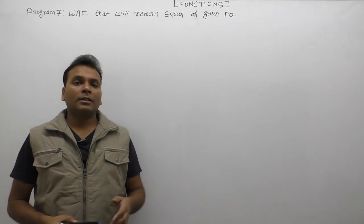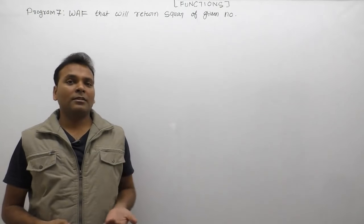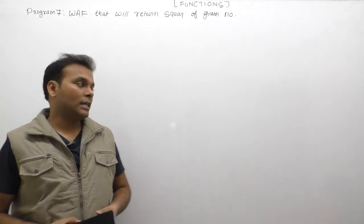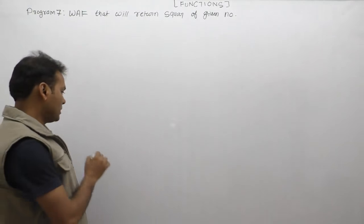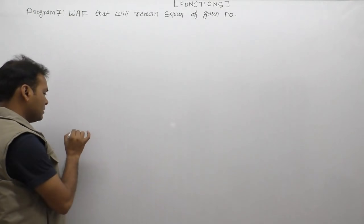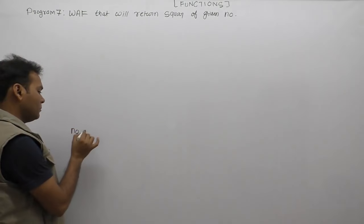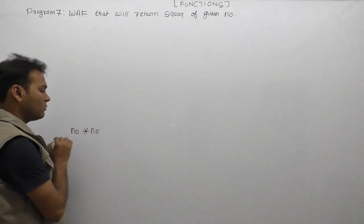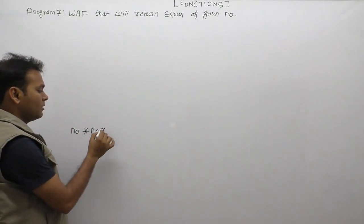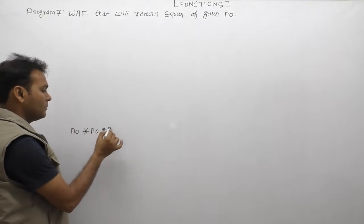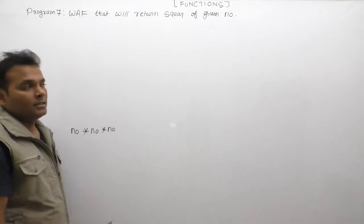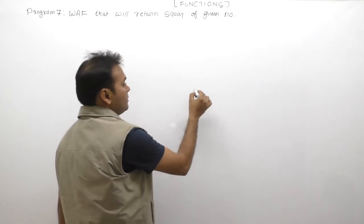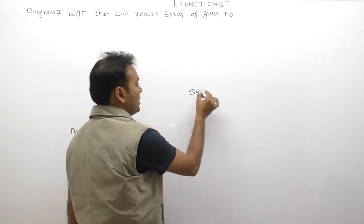Next C program: check the return or calculate the square of a given number. As we know, the square of a number is simply the number multiplied by itself. Similarly, a cube requires the same number multiplied three times. In this case, we are using the function name as square.